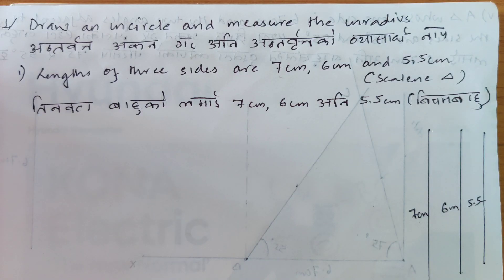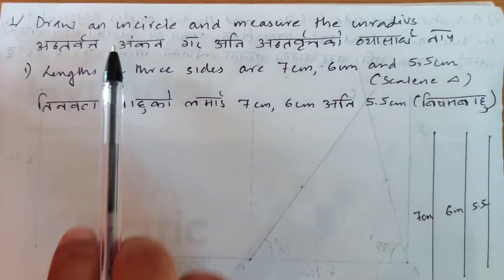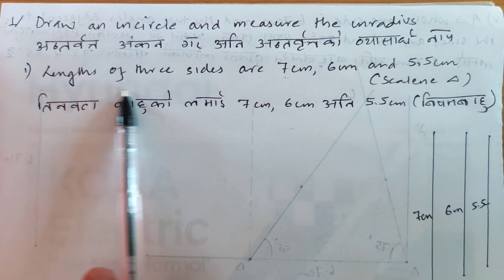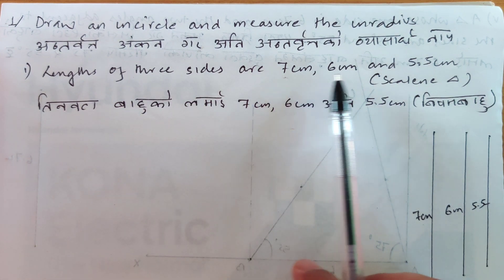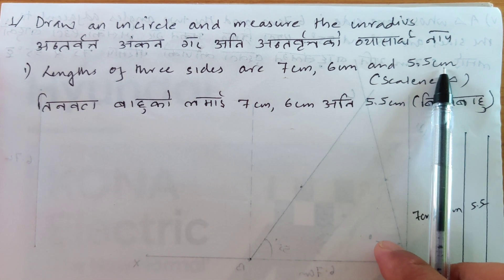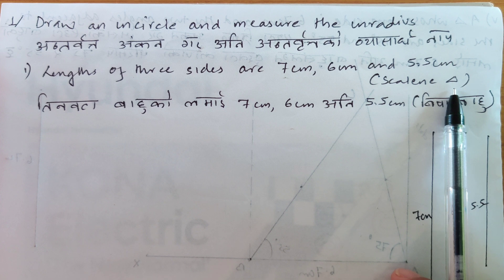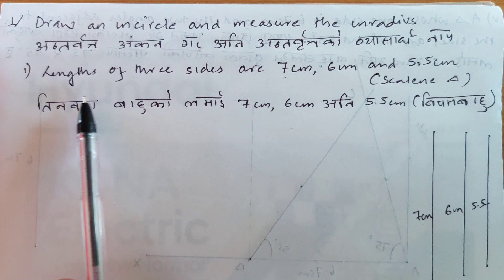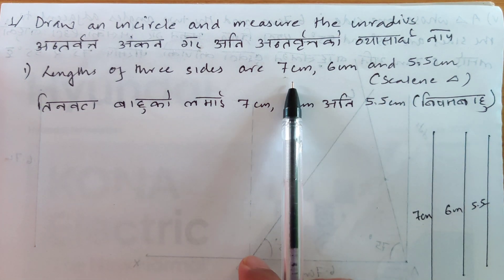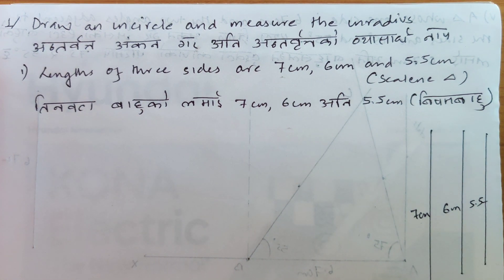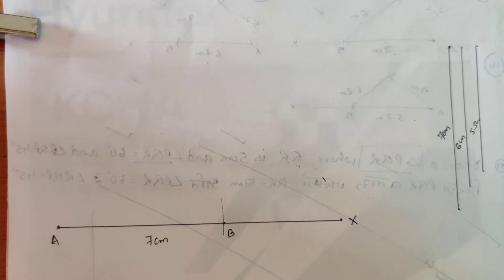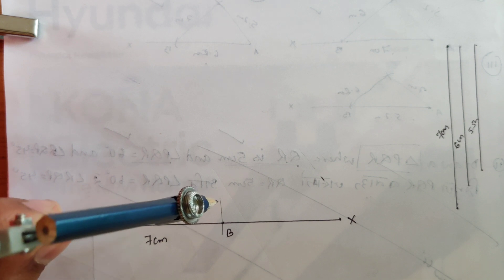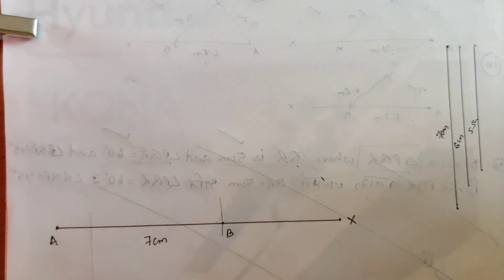Now we'll learn how to draw an incircle and measure the inradius. The first question: the lengths of the three sides are 7 cm, 6 cm, and 5.5 cm. This is a perfect example of a scalene triangle — all sides are unequal. We need to draw an incircle to this scalene triangle.